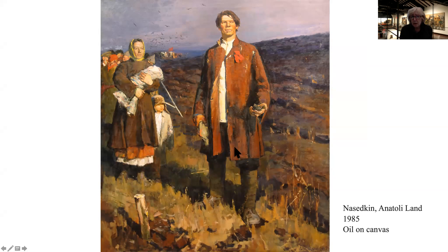What was Lenin talking about on Red Square? Probably he was voicing his famous slogans that won him the revolution: peace to nations, land to peasants, and factories to workers. And the next painting — called 'Land' — can be an illustration of his famous decree and slogan adopted early in 1917: land to peasants.